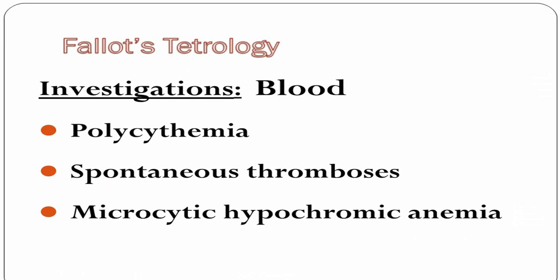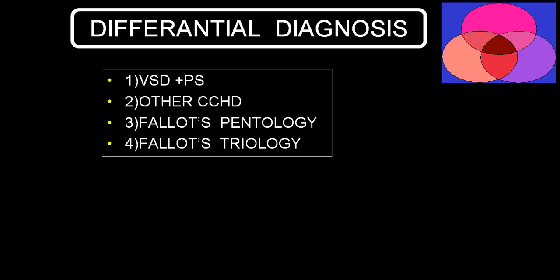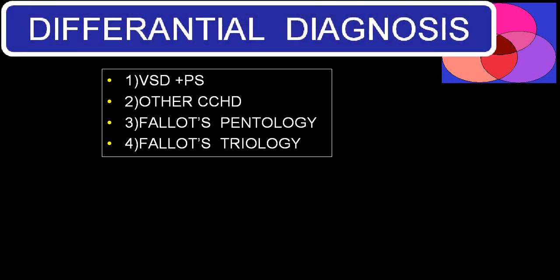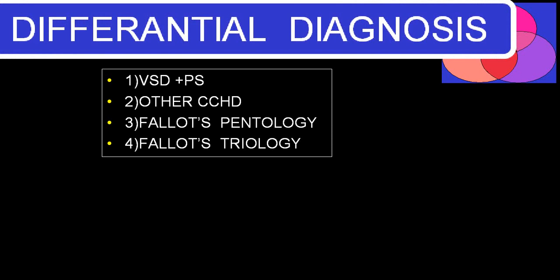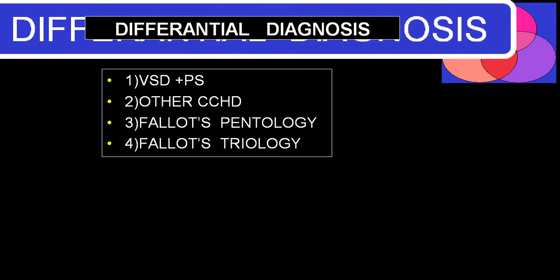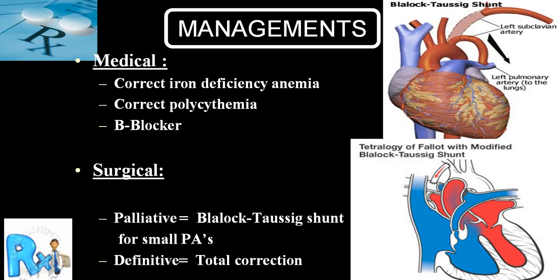Blood examination shows polycythemia and possibly microcytic hypochromic anemia. Differential diagnoses include VSD with pure pulmonary stenosis, other cyanotic congenital heart diseases, Fallot's pentology, and Fallot's trilogy — all easily differentiable by good echocardiography and angiography.